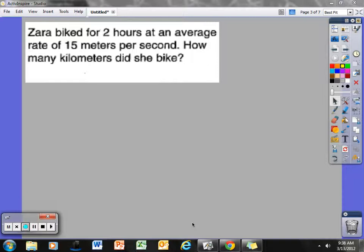Zara biked for 2 hours at an average rate of 15 meters per second. How many kilometers did she bike? I'm going to solve this one the way I think many of you would solve it. I'm going to write down some information here. She biked for 2 hours at a rate of 15 meters per second.